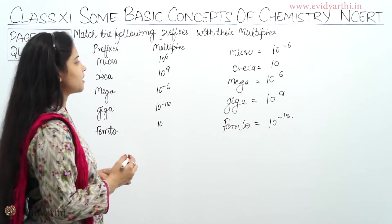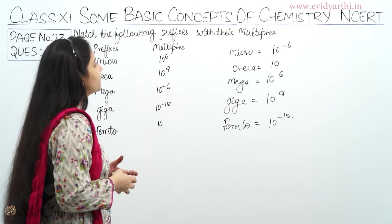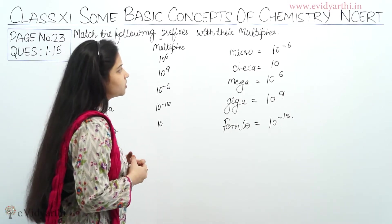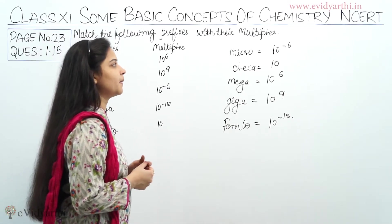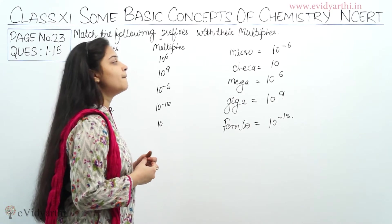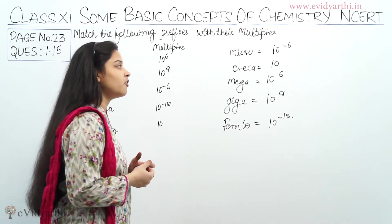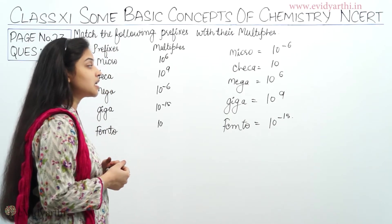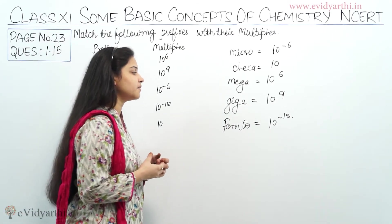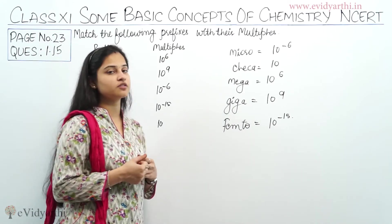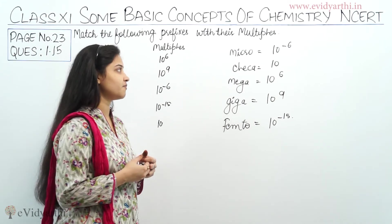So, the prefixes and their multiples are as follows: the multiple of micro is 10 raised to the power minus 6; multiple of Deca is 10; multiple of Mega is 10 raised to the power 6; multiple of Giga is 10 raised to the power 9; multiple of Femto is 10 raised to the power minus 15.